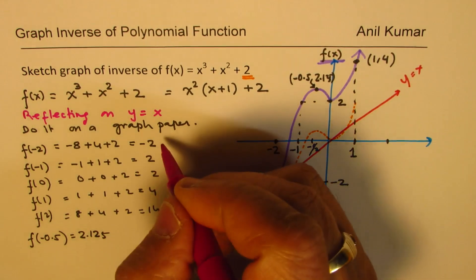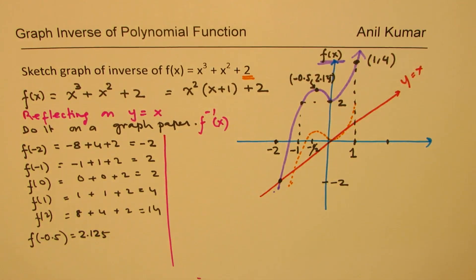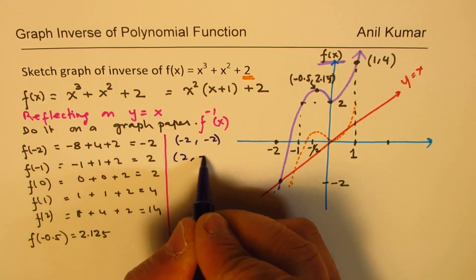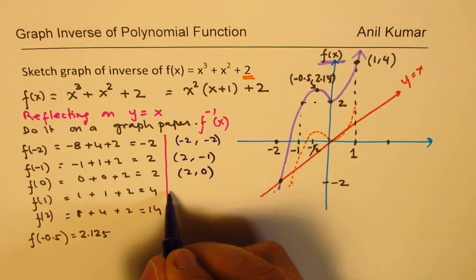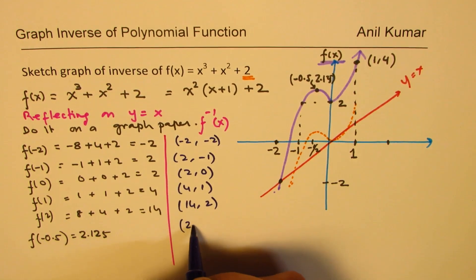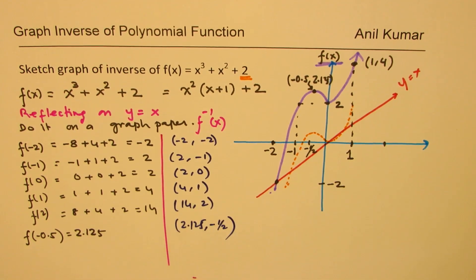Now, the inverse function points — you just flip them. To get those points on the inverse, you swap the x and y coordinates. So we get: (−2, −2) stays as (−2, −2); (2, −1) becomes (−1, 2)... wait — flipping gives us (−2, −2), then (2, −1), (2, 0), (4, 1), (14, 2), and (2.125, −0.5). These become our points on the inverse of the function. Whenever a function cannot be written explicitly in terms of x or y, you should use graphing techniques.